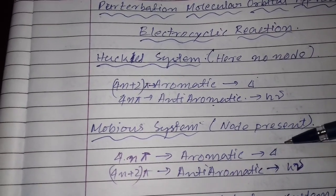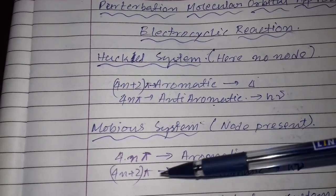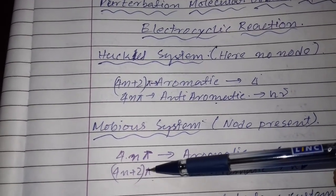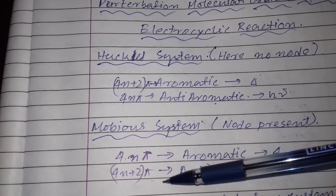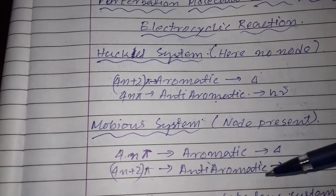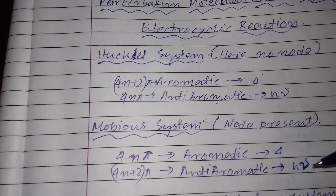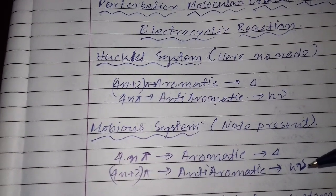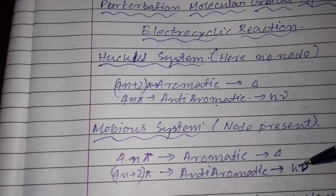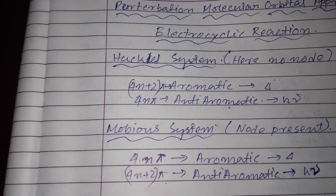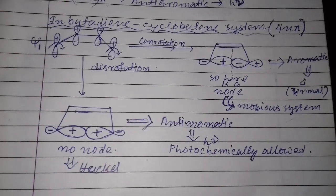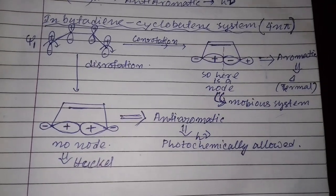In the Möbius system, 4n+2 pi electronic systems are anti-aromatic and photochemically allowed. Now we come to the cyclobutadiene and cyclobutene system, which is a 4n pi electronic system.